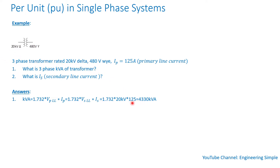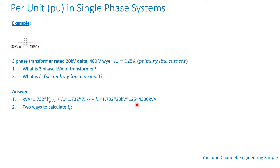So the three-phase kVA equals √3 times 20,000 V times 125 amps, which equals 4,330 kVA.